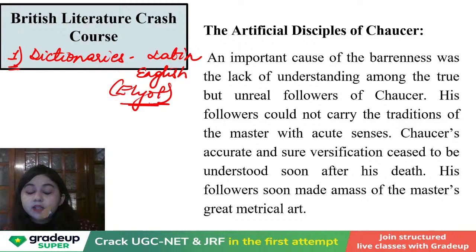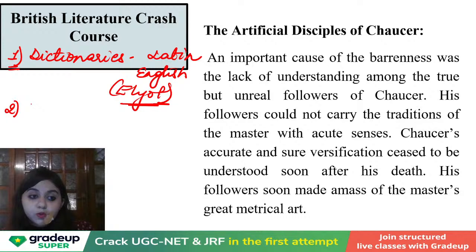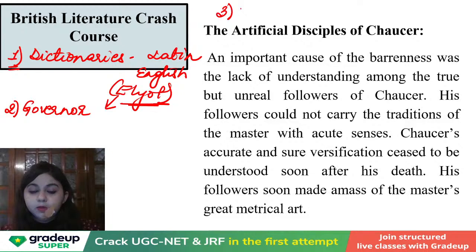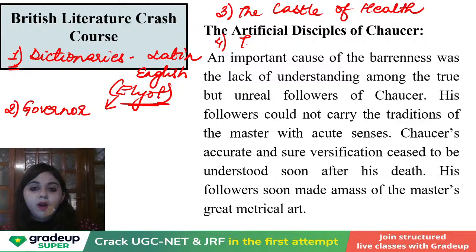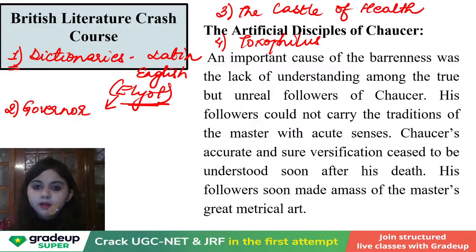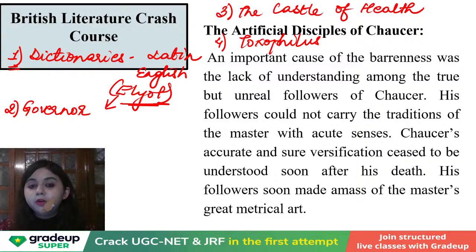Thomas Elyot completed the need for dictionaries. Then there was a need for how you can train monarchs — The Governor by Thomas Elyot completed this need. Then people needed to know how to stay fit — so you had The Castle of Health, written by Thomas Elyot. Then people wanted to know the art of archery — so you had Toxophilus, written by Roger Ascham. People also wanted to know about certain notions of the period. Depending upon the times, people were not having full patronage, so they were not engaging in imaginative works as Chaucer had the liberty to do.